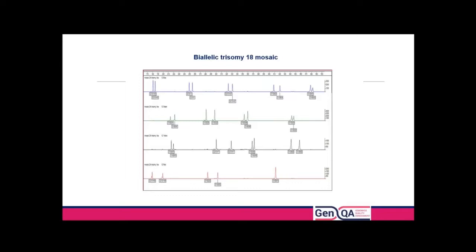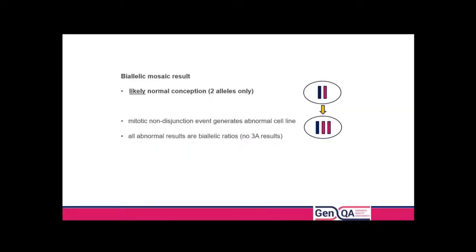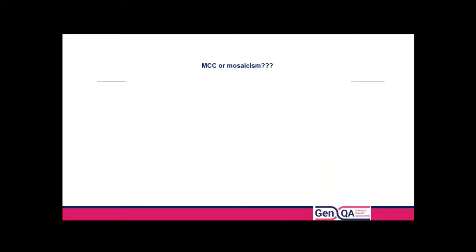The other situation for trisomy 18 mosaicism is where all five markers give an inconclusive ratio with no evidence of a third allele present. This is most likely a normal conception with two alleles present, where a mitotic non-disjunction event generates the abnormal cell line. Two of the chromosomes are identical because they've non-disjoined in mitosis, and you'll get these abnormal results for every marker in the assay for that chromosome.